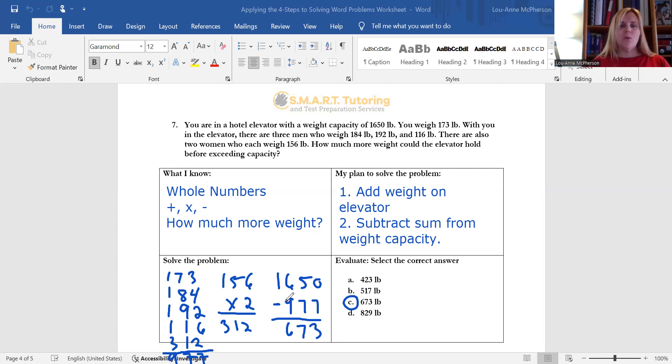All right, so the question is this. You are in a hotel elevator with a weight capacity of 1,650 pounds. You weigh 173 pounds. With you in the elevator there are three men who weigh 184 pounds, 192 pounds, and 116 pounds. There are also two women who each weigh 156 pounds. How much more weight could the elevator hold before exceeding capacity?